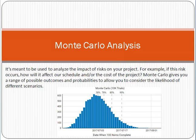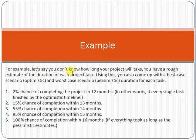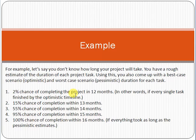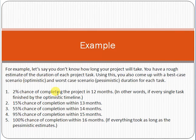For example, let's say you don't know how long your project will take. You have a rough estimate of the duration of each task, and you come up with a best case (optimistic) and worst case (pessimistic) duration. Using Monte Carlo analysis, it will tell you: 2% chance of completing in 12 months, 15% chance within 13 months, 55% chance within 14 months, 95% chance within 15 months, and 100% chance within 16 months — the pessimistic or worst case scenario.